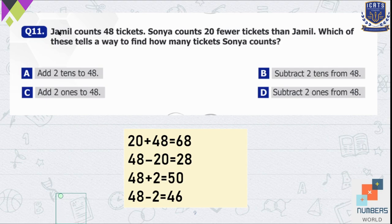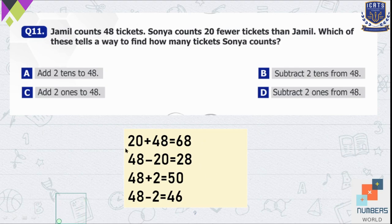Jamil counts 48 tickets total and Sonia counts 20 fewer tickets than Jamil. Fewer means less, and less means subtraction. So we subtract 20 from 48. Option B is correct: 48 minus 20 is equal to 28.